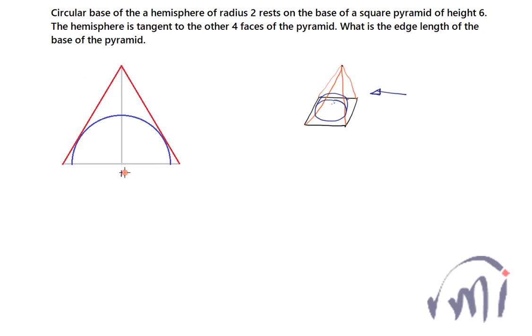Here the radius of this hemisphere is 2 and the height of this pyramid is 6, and we have to find the edge length of this square face of this pyramid. That means we have to find this length, length from this point to this point, right.